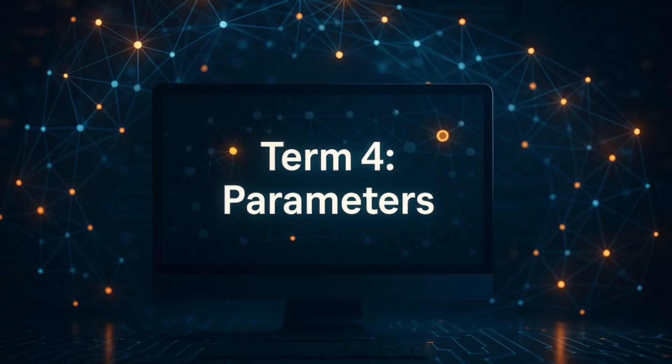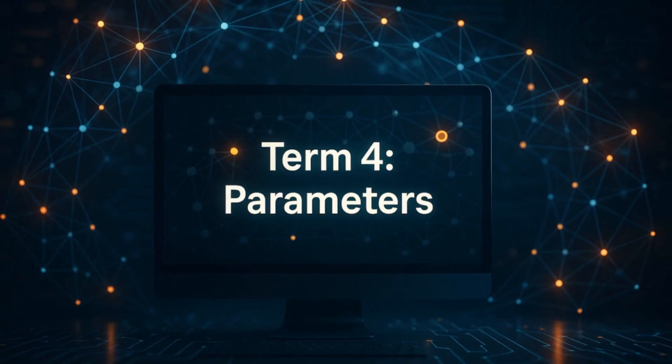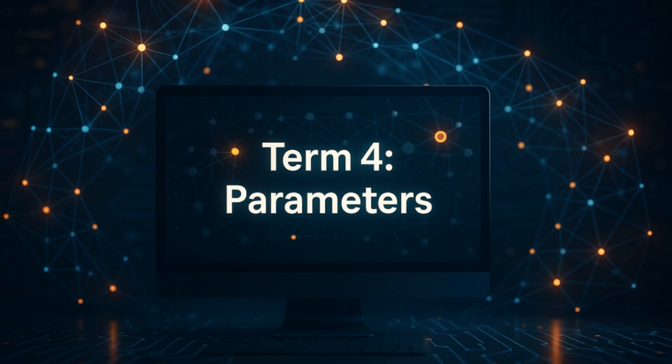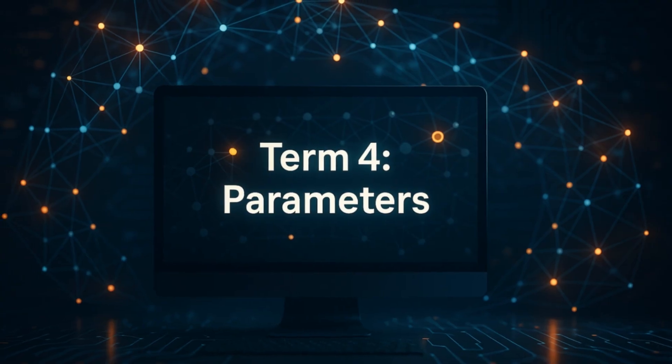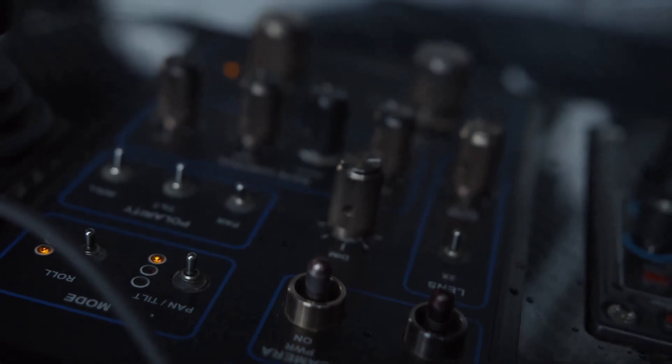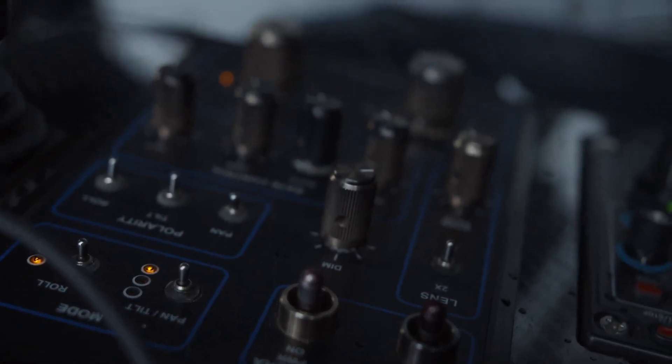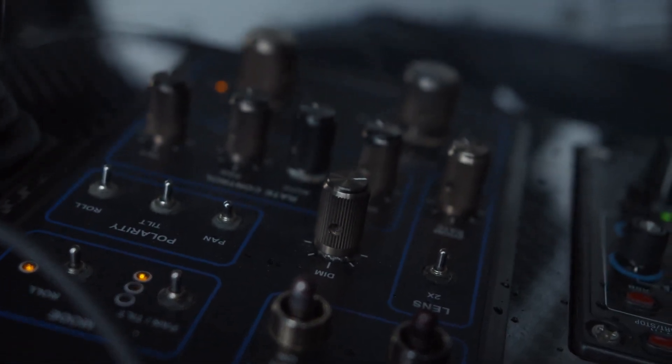Speaking of what makes them powerful, let's break down term four: parameters. Parameters are like the tiny adjustable knobs inside an AI model that determine how it processes information.